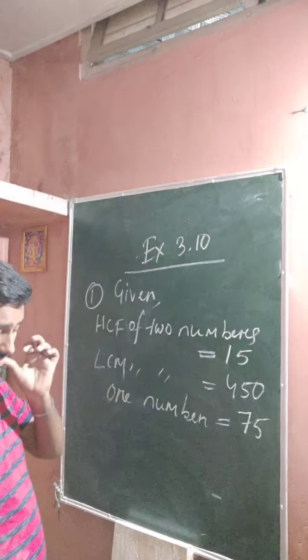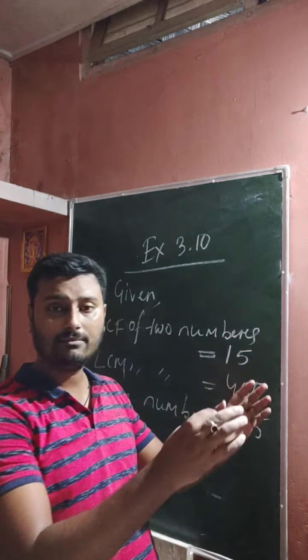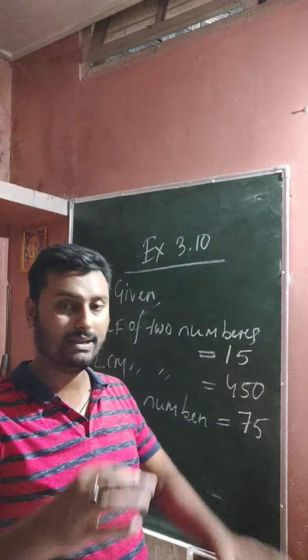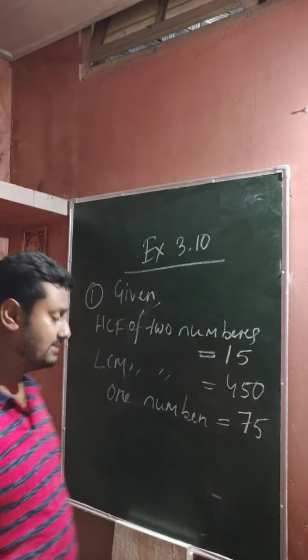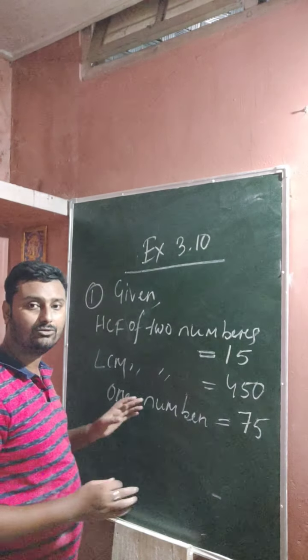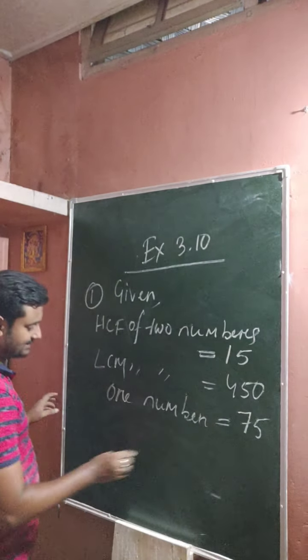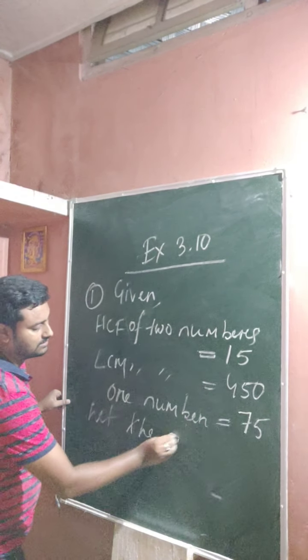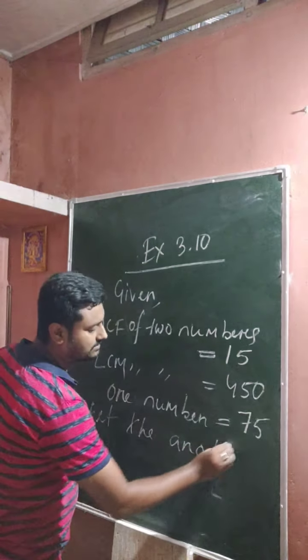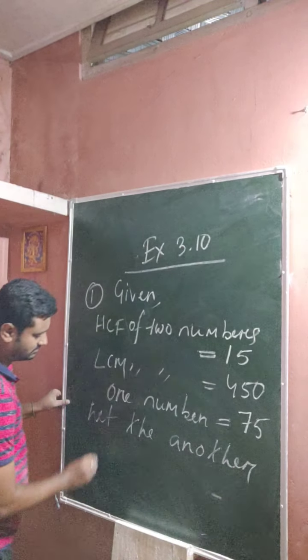So in class 5, you just solved the question. But in class 6, in algebra, you will solve by taking, unless X. So let the other number be X, okay?